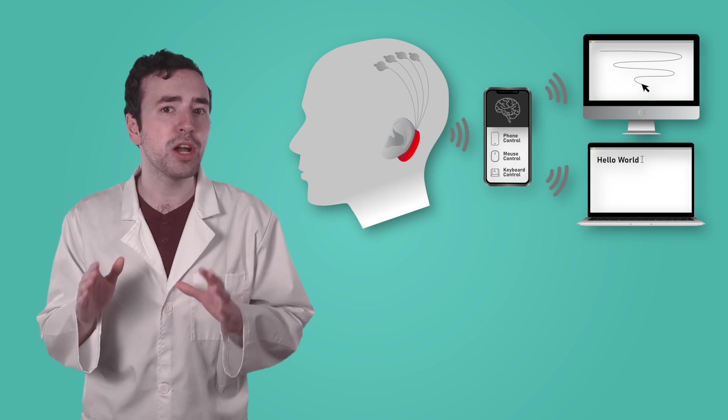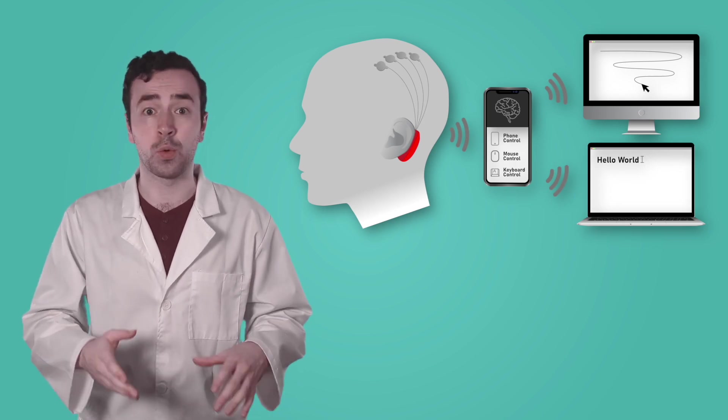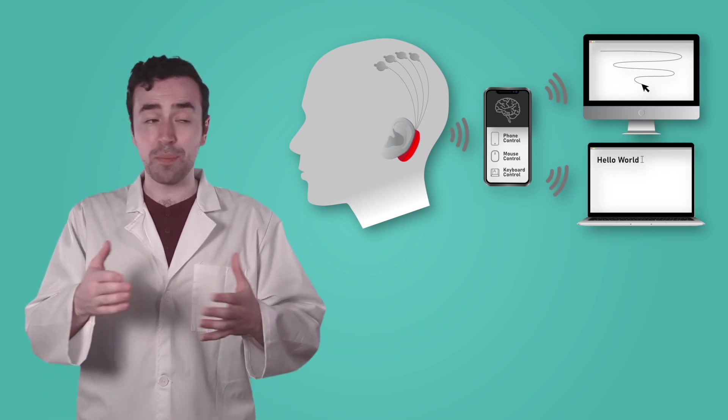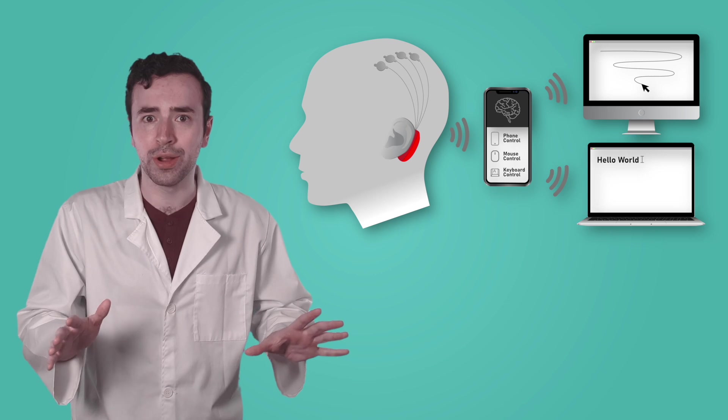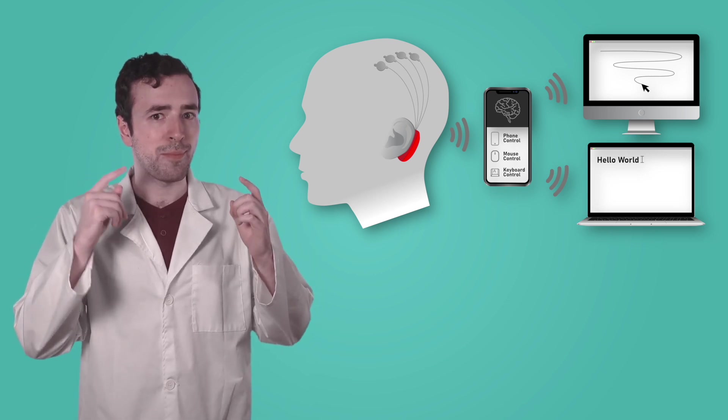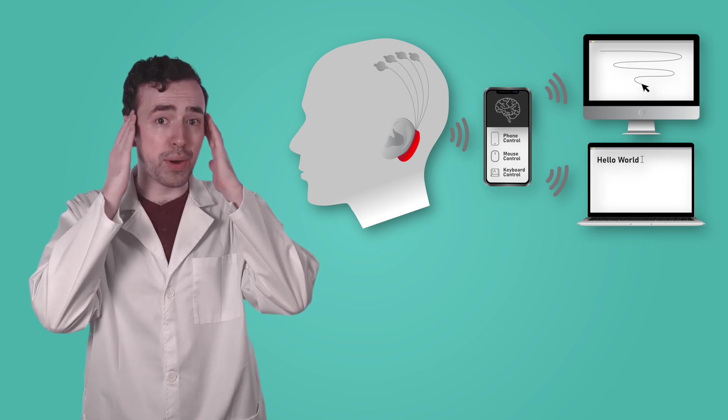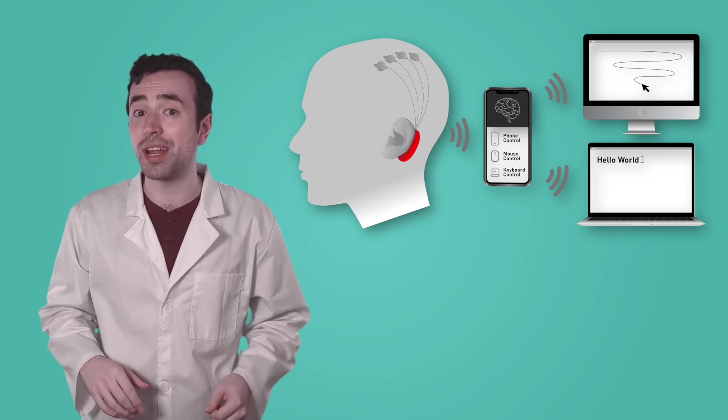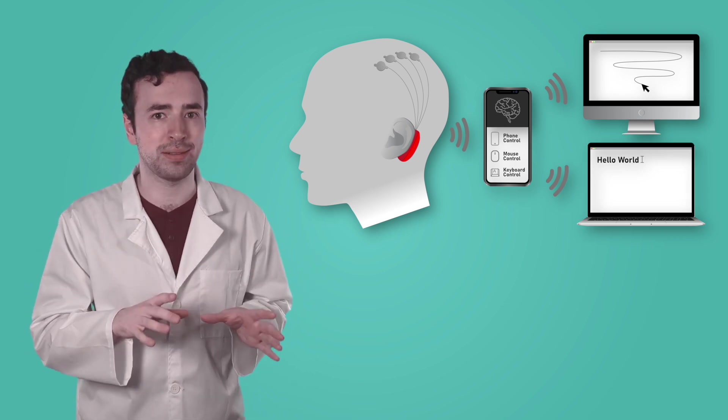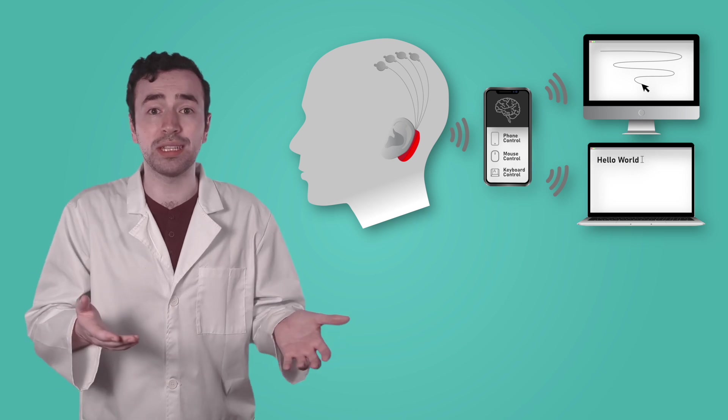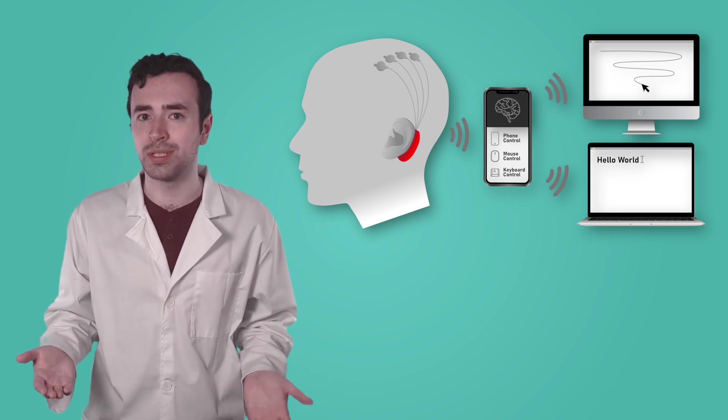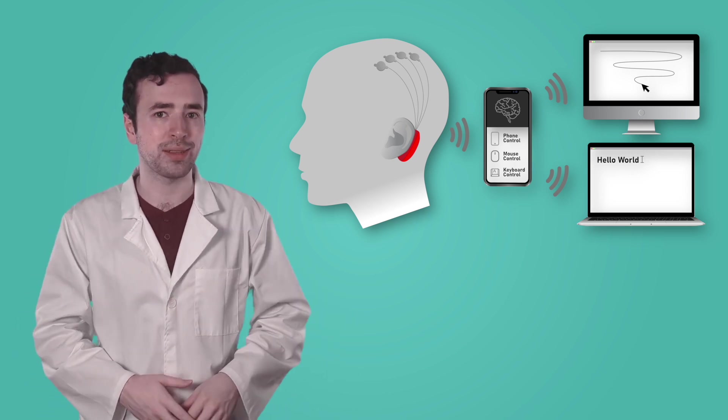And if that's not futuristic enough for you, scientists are currently researching brain-computer interfaces, or BCIs. Imagine being able to control a computer with just your thoughts. BCIs are making this possible. By placing sensors on the brain, BCIs can translate brain activity into commands. This can help people with disabilities communicate and interact with the world in new and unique ways.